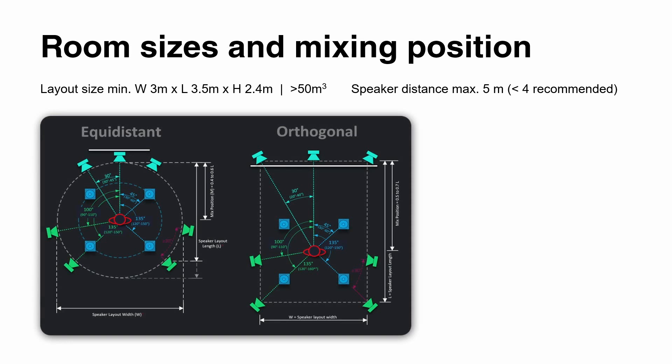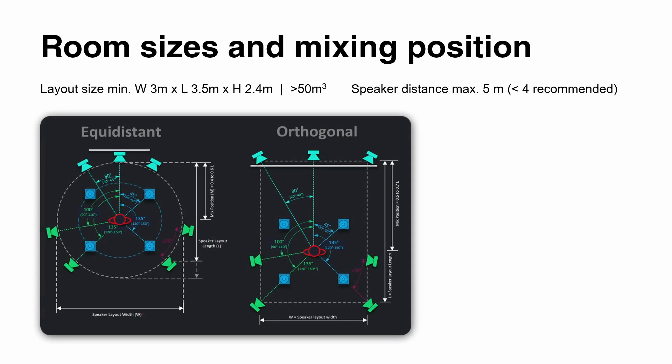When we look at room sizes and the mixing position, these are critical things to consider. The layout is calculated by the distance between the center speaker in the front and your furthest rear surround speakers — that's your layout length. Your layout width is the distance between your side surround speakers. Layout height is recommended to be 2.4 meters or higher. Speaker distance should not exceed 5 meters, though below 4 meters is recommended for an Atmos home environment; otherwise, you would sit too much in the midfield and get too much reverberation from the room.